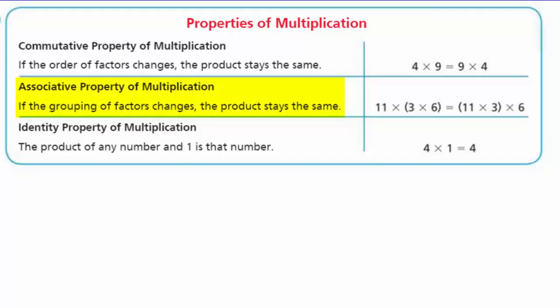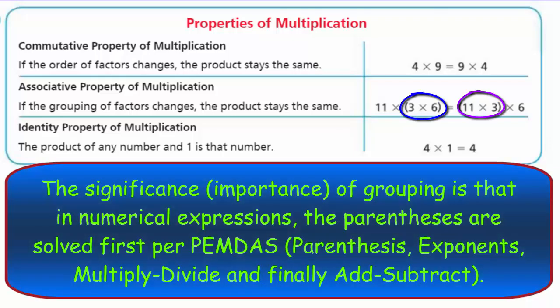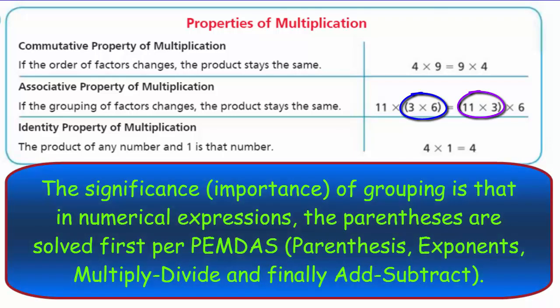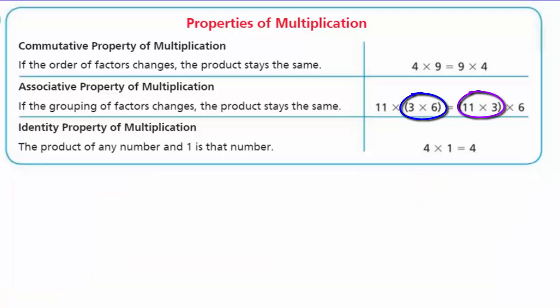It's still the same product because 4 times 9 is 36. So even if you reverse those two factors, doing the little switcheroo, you still end up with 36. The associative property of multiplication, same thing. If the grouping of factors changes, the product stays the same. Go ahead and look at our example. What do they do? They grouped the 3 and the 6 first. Then they grouped the 11 and the 3. Doesn't change the product at all.